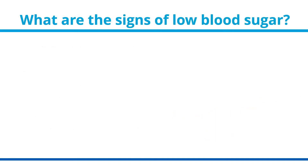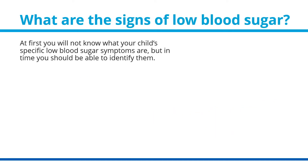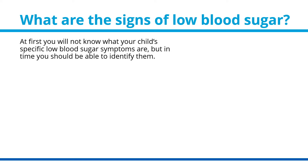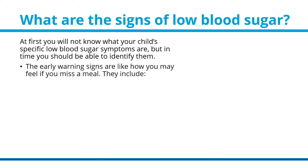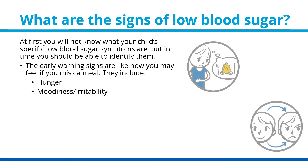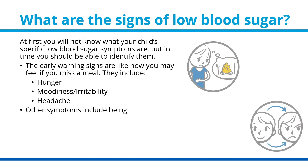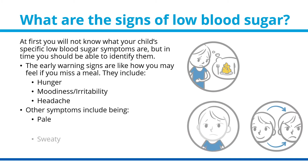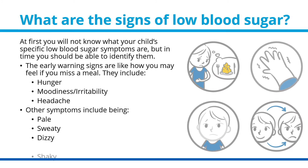What are the signs of low blood sugar? At first, you will not know what your child's specific low blood sugar symptoms are, but in time you should be able to identify them. The early warning signs are like how you may feel if you miss a meal. They include hunger, moodiness or irritability, and headache. Other symptoms include being pale, sweaty, dizzy, and shaky.